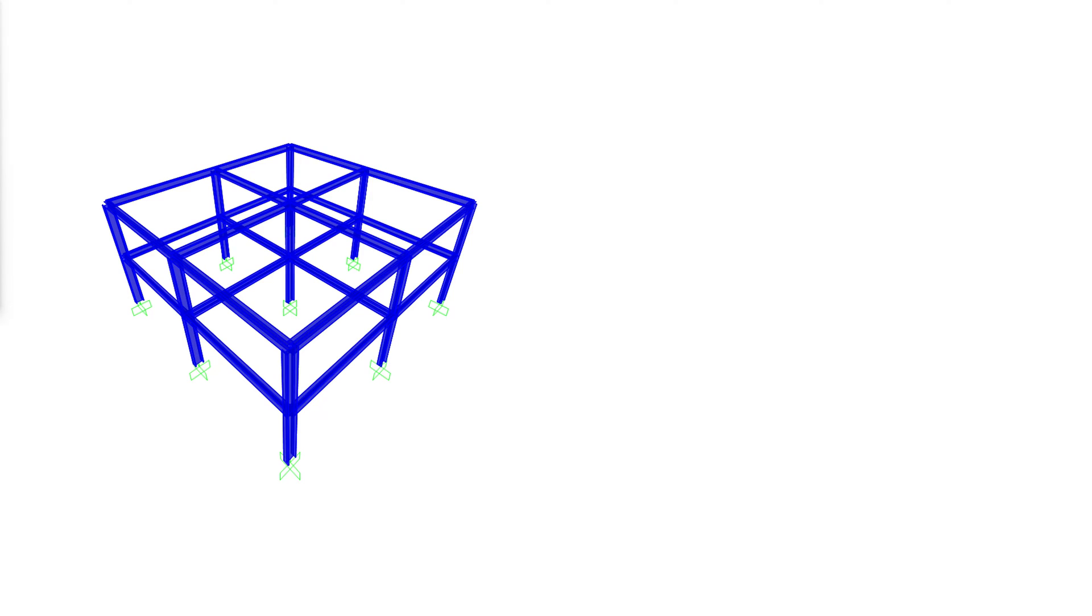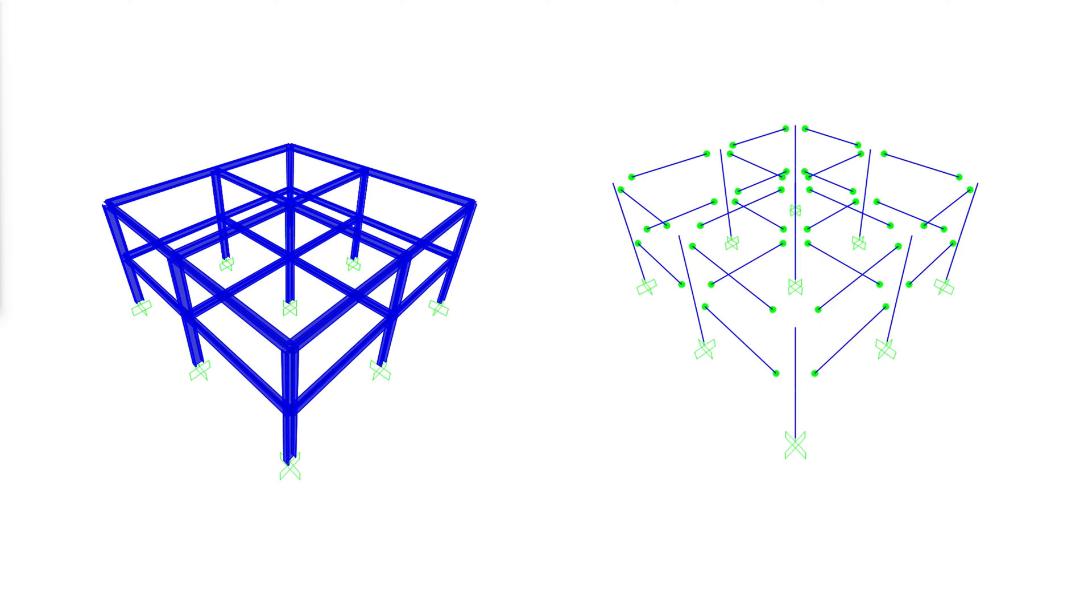The first step is to model the frame. Because we are concerned with designing a simple connection that carries no bending moments, we will make sure to model this by releasing the bending moment about the major axis at both member ends. This is done differently in different finite element software, but they all serve the same purpose.